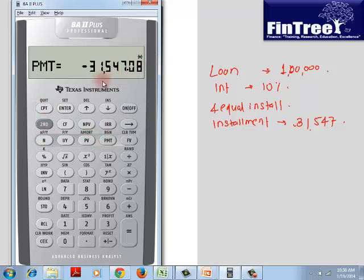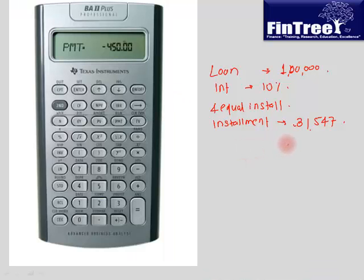Now what we want to understand is the true meaning of this 31,547. What does it exactly mean? So let's build a table. This table is called amortization table. How do you build amortization? This is year 1, this is year 2, year 3, year 4, opening amount of loan.